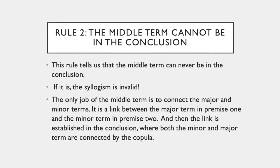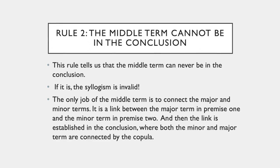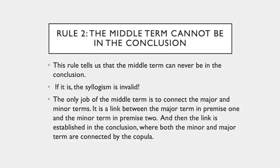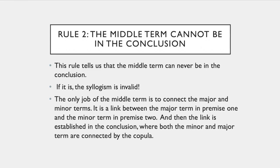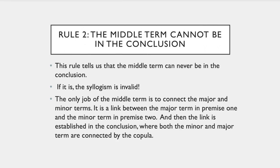You've been prepared for this because we've seen many syllogisms that have two terms in the conclusion. The minor term is the subject of the conclusion and the major term is the predicate of the conclusion.